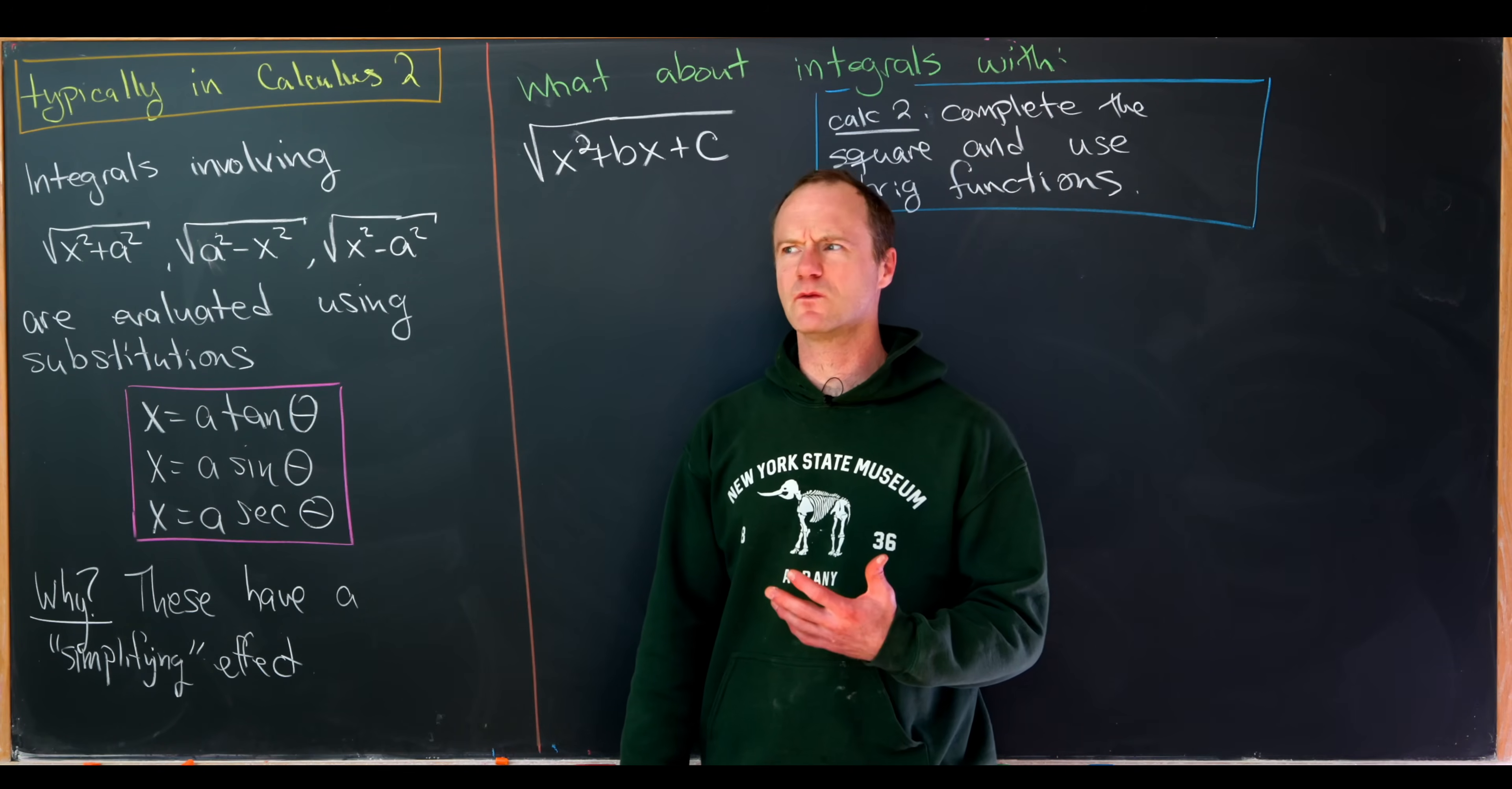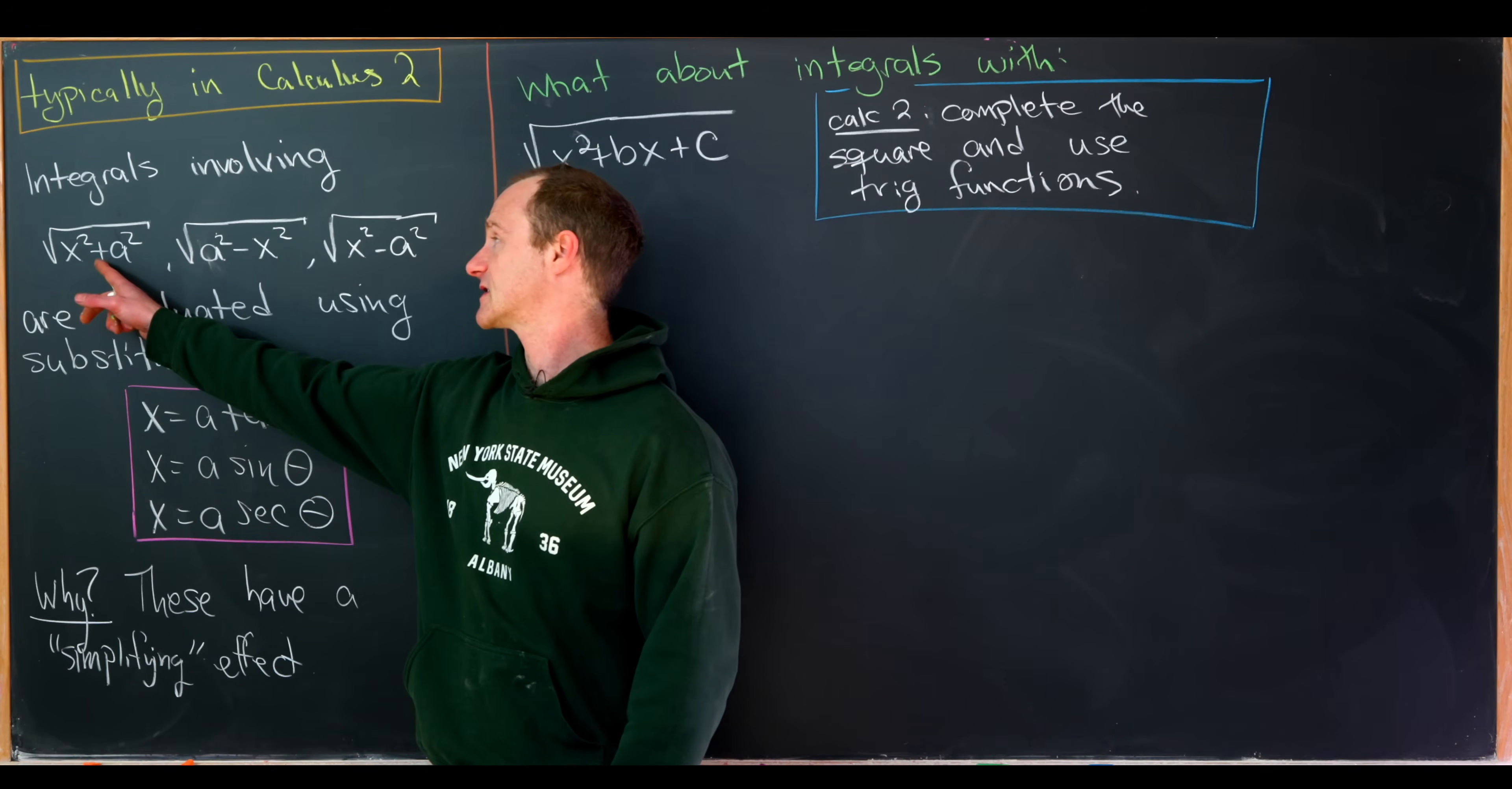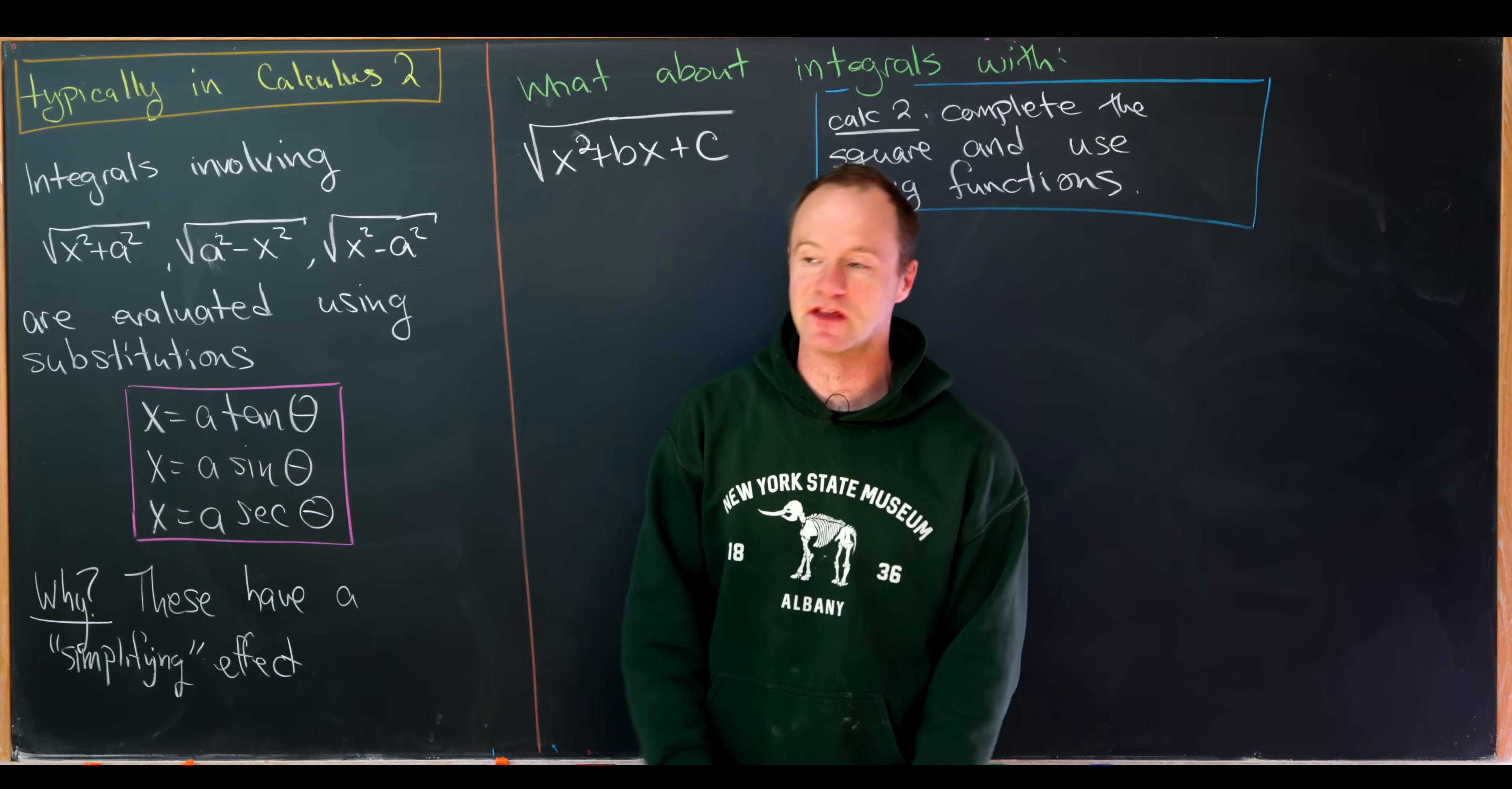And you might say, well, why would we do these sort of substitutions in the first place? Well, it turns out that it's because the trig identities are so nice. If you plug in a tangent theta for x inside of this, you get a nice simplification due to the Pythagorean trig identity. And the same thing for the other things. So all in all, they have a very simplifying effect on the function within the integral.